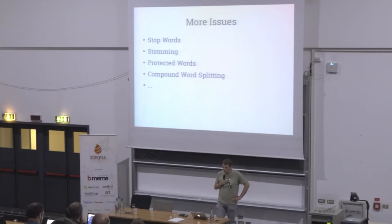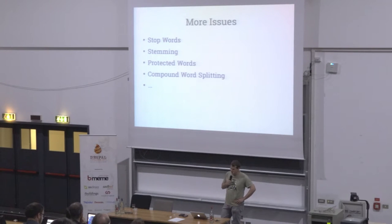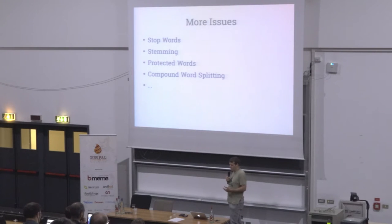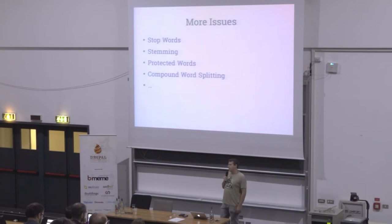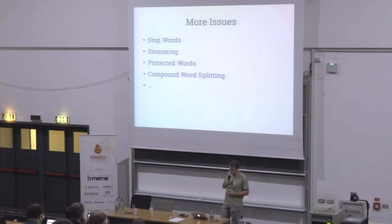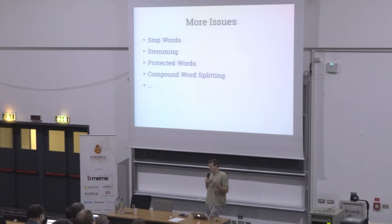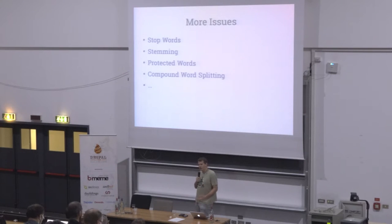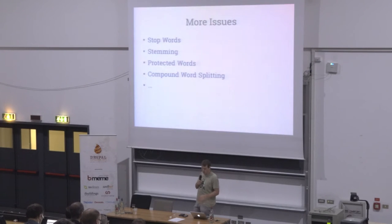This is just a simple example. In full text searching there are many more language-specific configurations. For example, stop words — words that exist in different languages but have completely different meanings, and in one language it's a stop word while in another it's not. The algorithms for stemming — to get the same results for singular and plural forms — are completely different per language. The same is true for protected words that should not be stemmed, and compound word splitting, which in German lets you attach different nouns to each other. All of this needs to be configured per language, otherwise you will immediately get strange search results.